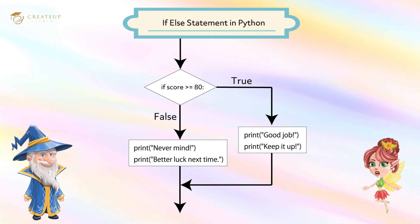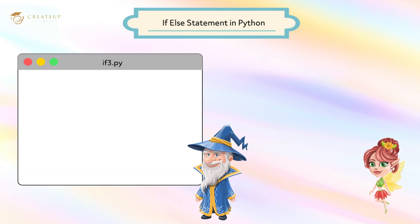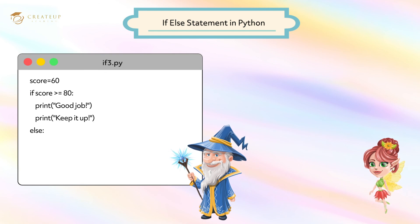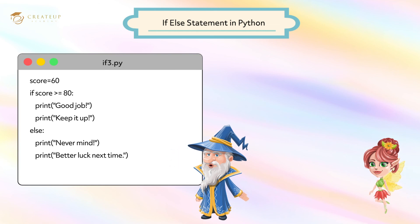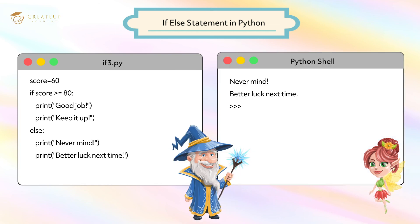So if I score lower than 80, Python encourages me. That's right. Open a new file in IDLE and write the code like this. Save and run this program. Python encouraged me because my score was below 80 points.